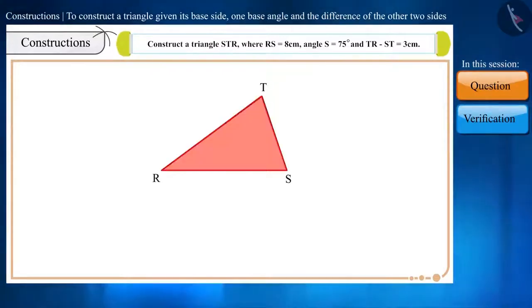Let's see this question. Construct the triangle STR where RS equals 8 cm, angle S equals 75 degrees, and TR minus ST equals 3 cm.